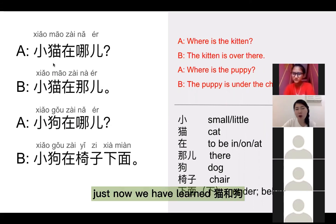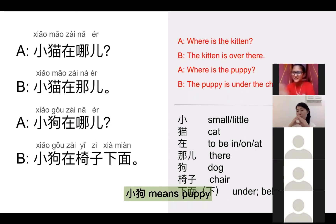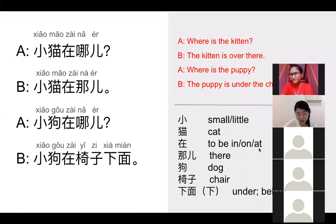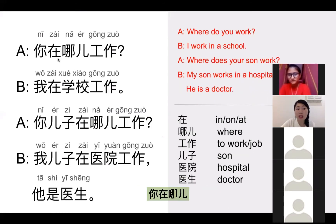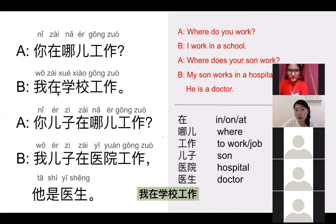Just now we learned 猫和狗。小猫 means kitten, 小狗 means puppy. 然后这个「在」means to be in, on or at. 在哪儿?小猫在哪儿?你在哪儿工作? Where do you work? 我在学校工作。I work in the school.